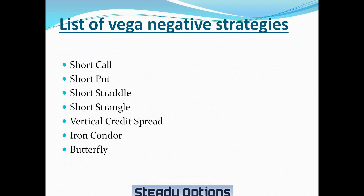And a list of gamma-negative strategies includes short call, short put, short straddle, short strangle, vertical credit spread, iron condor, and butterfly. These are all selling strategies — we are selling calls, puts, or some kind of spreads.